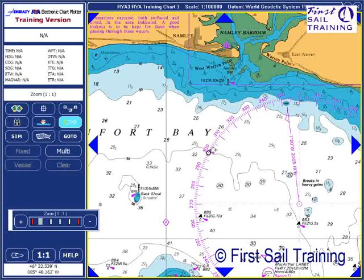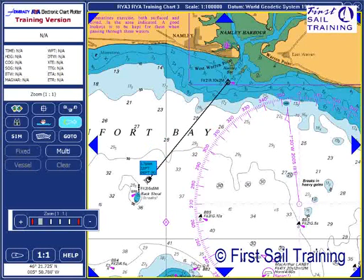We'll have a quick look at both of those — fixed first of all. Click on that and then move our mouse across to the first point. We'll choose the NAMLE bar beacon here, so put our mouse over that and click. Then we move our mouse to the target point, which will be the isolated danger mark on Black Shawl. Move our mouse over that and click again. The distance between the two points is 4.24 nautical miles. The direction from NAMLE bar beacon to Black Shawl is 219 degrees true.